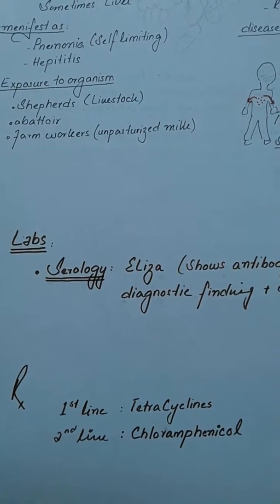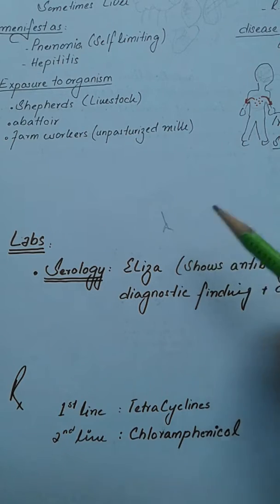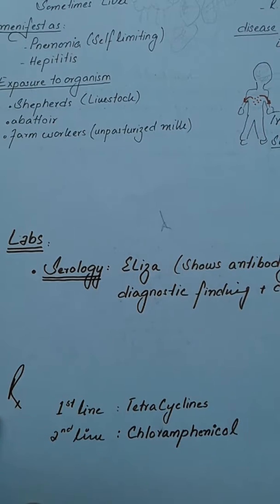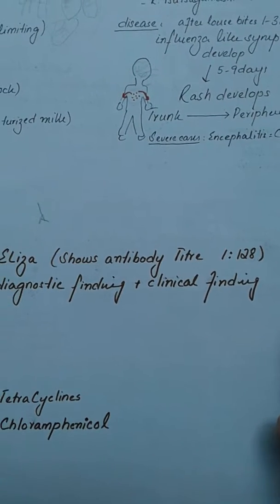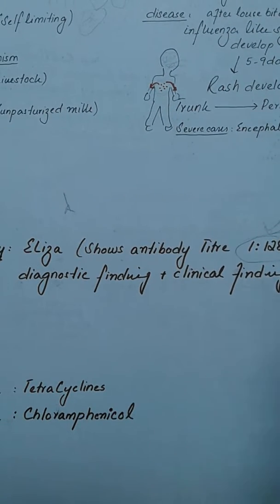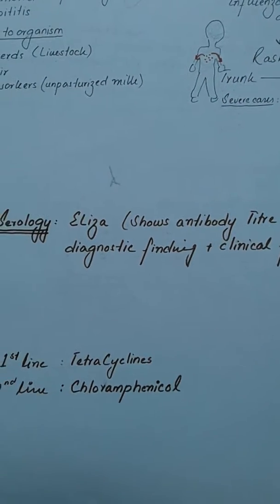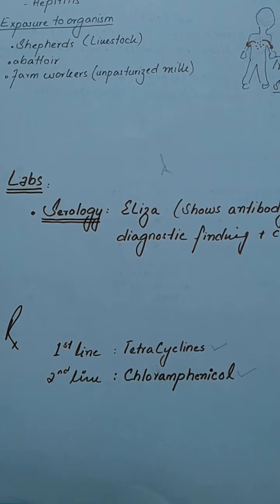We can diagnose this disease by detecting antibodies in the blood by serology. In serology, the classical test is ELISA, which will show an antibody titer of 1 to 128, which is diagnostic for identifying Rickettsia. The treatment of choice—the first line—is tetracyclines. The second line treatment is chloramphenicol.